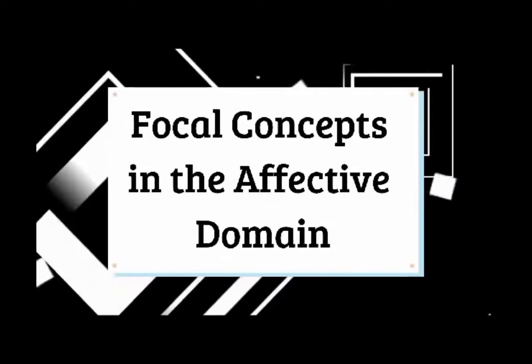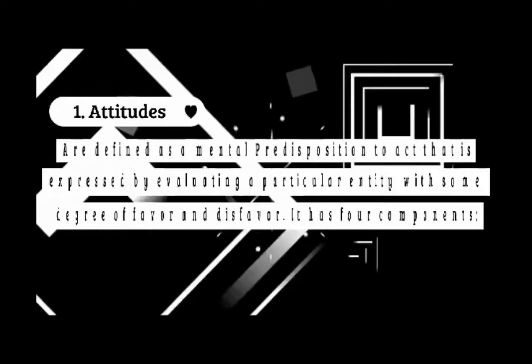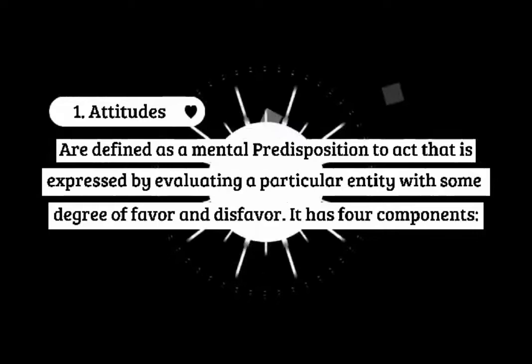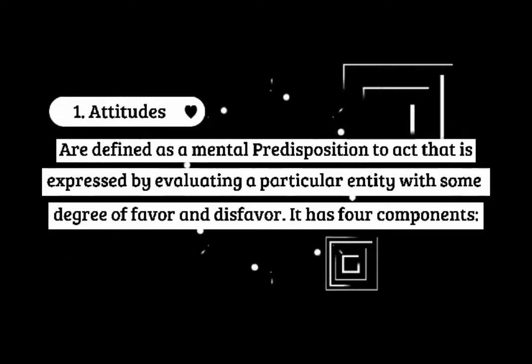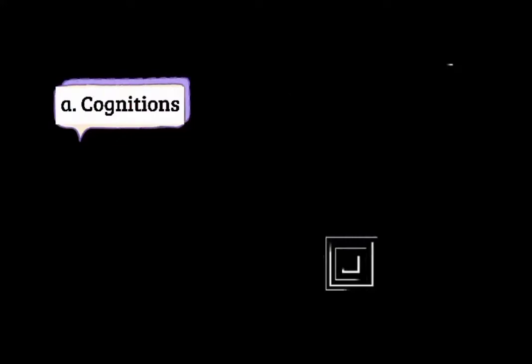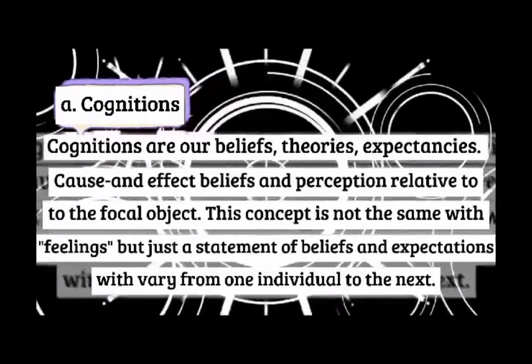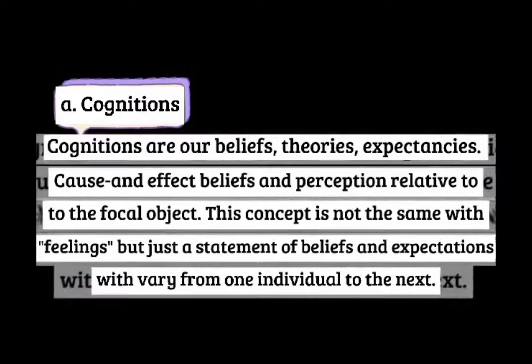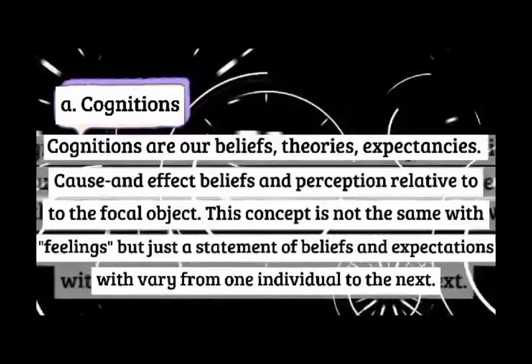The first focal concept in the affective domain is attitudes. Attitudes are defined as a mental predisposition to act, expressed by evaluating a particular entity with some degree of favor or disfavor. Attitudes have four components. The first is cognitions — our beliefs, theories, and expectations, including cause-and-effect beliefs and perceptions related to the focal object. This is not the same as feelings; it is simply a statement of beliefs and expectations that vary from one individual to the next.